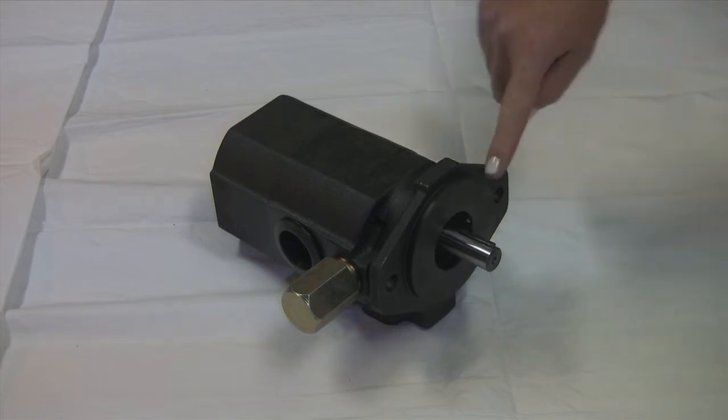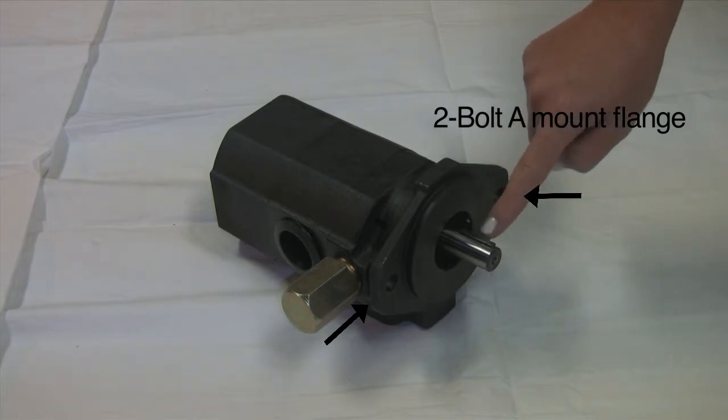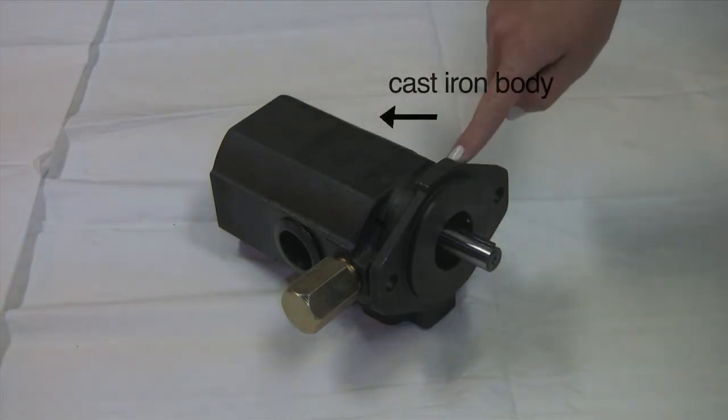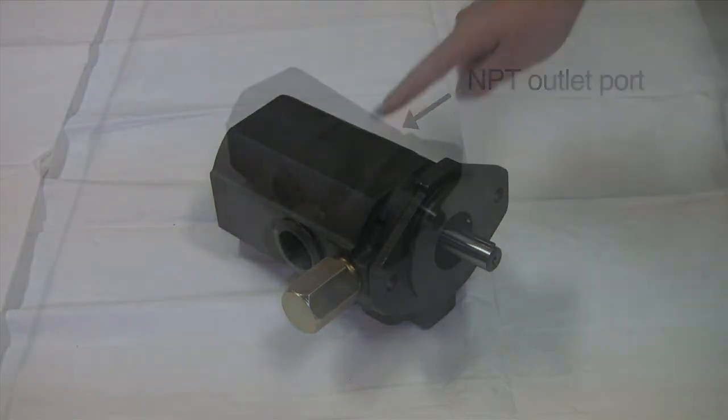The 22 and 28 GPM Xtreme Hydraulic Log Splitter Pumps have a 2-bolt A mount flange, a 5/8 straight shaft, a cast iron body, an MPT inlet port, and an MPT outlet port.